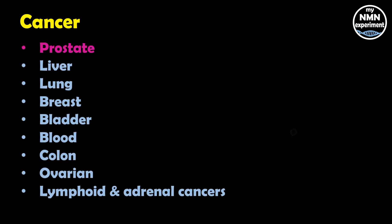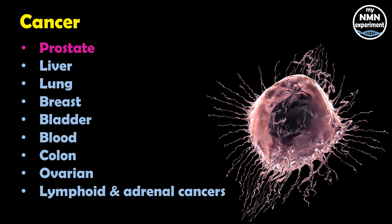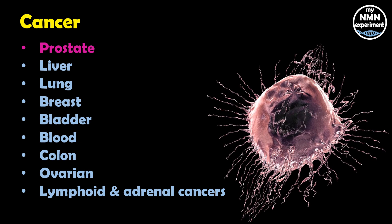Quercetin may have anti-cancer effects because of its antioxidant properties. In a review of test tube and animal studies, quercetin was found to suppress cell growth and induce cell death in prostate cancer cells. Other test tube and animal studies observed that the compound had similar effects in liver, lung, breast, bladder, blood, colon, ovarian, lymphoid, and adrenal cancer cells.